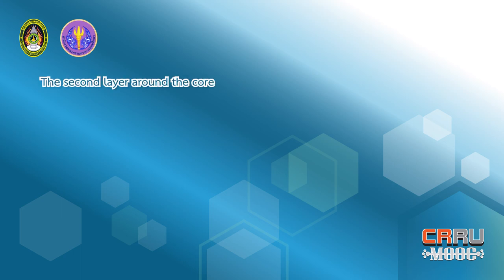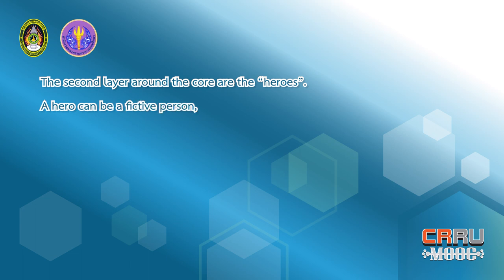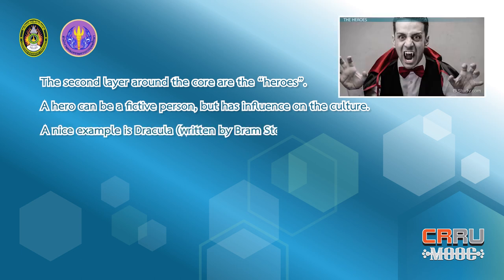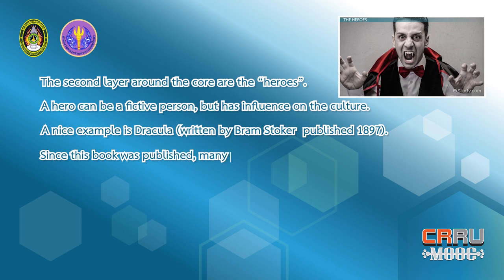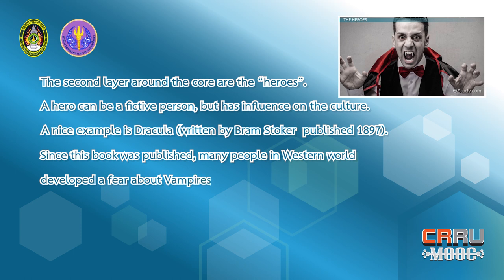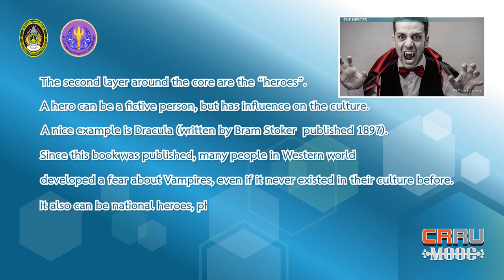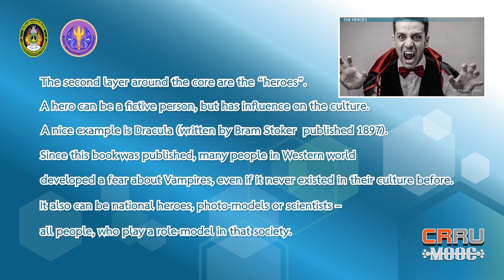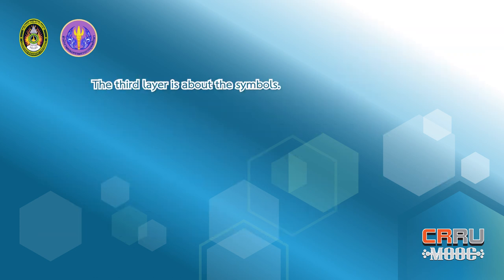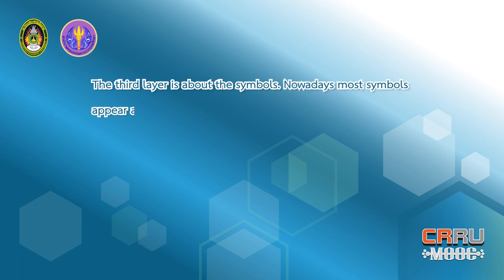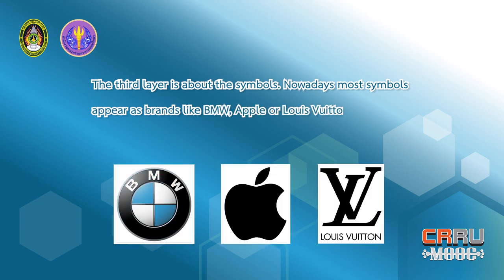The second layer around the core is heroes. A hero can be a fictive person but still has influence on the culture. A nice example is Dracula, written by Bram Stoker and published in 1897. Since this book was published, many people in the Western world developed a fear of vampires, even if it never existed in their culture before. Heroes can also be national heroes, father models, scientists, or people who serve as role models in society. The third layer is about symbols. Nowadays, most symbols appear as brands like BMW, Apple, or Louis Vuitton. Symbols usually move according to the momentary fashion.